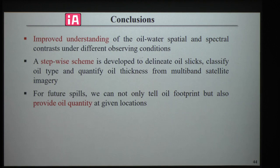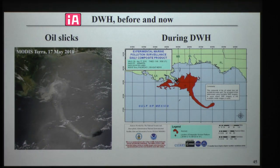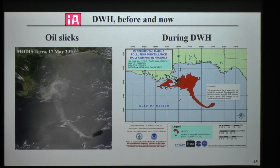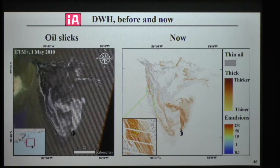In conclusion, we now have improved understanding of oil-water spatial and spectral contrasts under different observing conditions. A stepwise scheme is developed to delineate oil slick, classify oil type, and quantify oil thickness for multiband satellite imagery. For future spills, we cannot only identify the oil footprint, but also provide oil quality information at given locations. During the Deepwater Horizon oil spill, federal agencies like NOAA simply used the oil presence/absence map to facilitate mitigation. Now I can provide more detailed information over different types of oil and oil thickness.